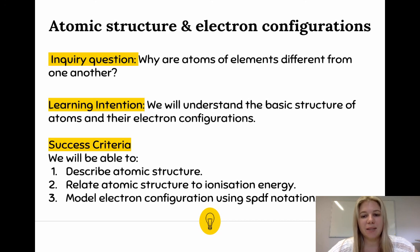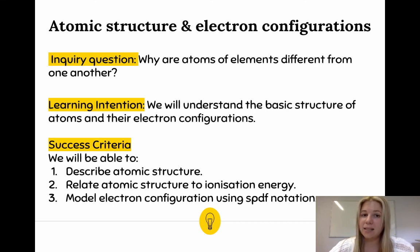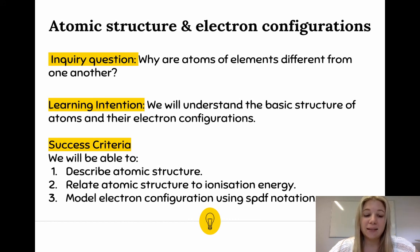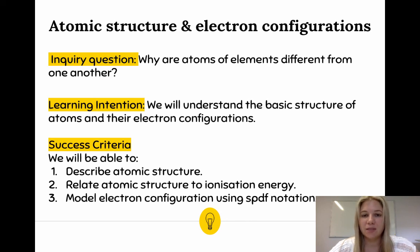Our learning intention is to understand the basic structure of atoms and their electron configurations. Describing atomic structure means looking at protons, neutrons, and electrons in shells and orbitals. Relating atomic structure to ionization energy means thinking about shielded electrons and valence electrons. The last objective — modelling electron configuration using SPDF notation — you should now understand what shapes are made by the different orbitals, and in the next video we'll look at how to write that out. If you feel you haven't met success criteria one and two, please watch the video again.